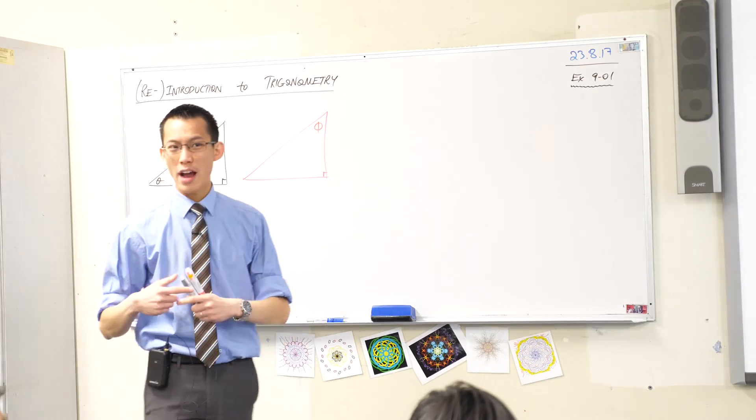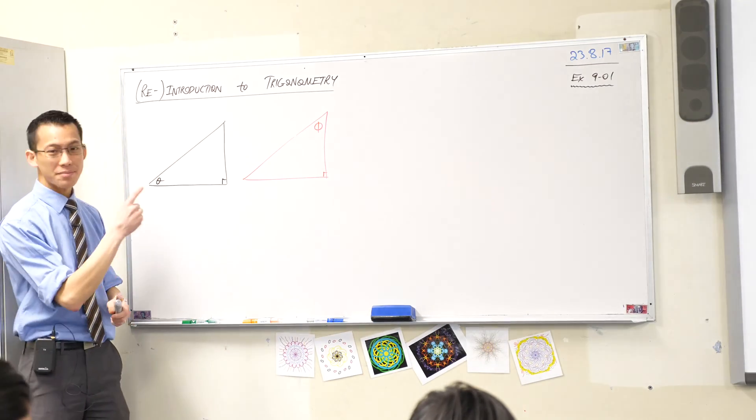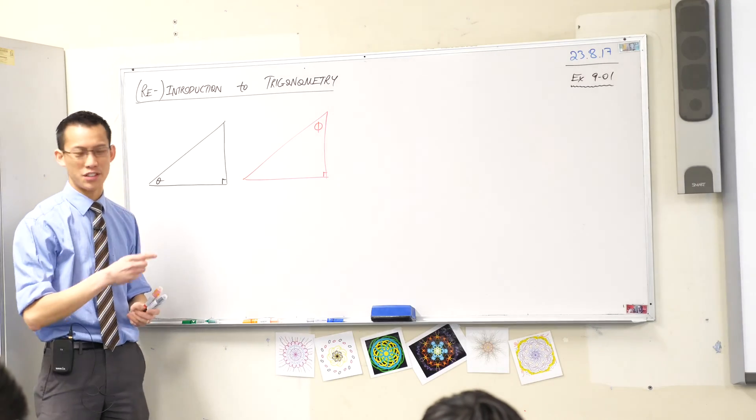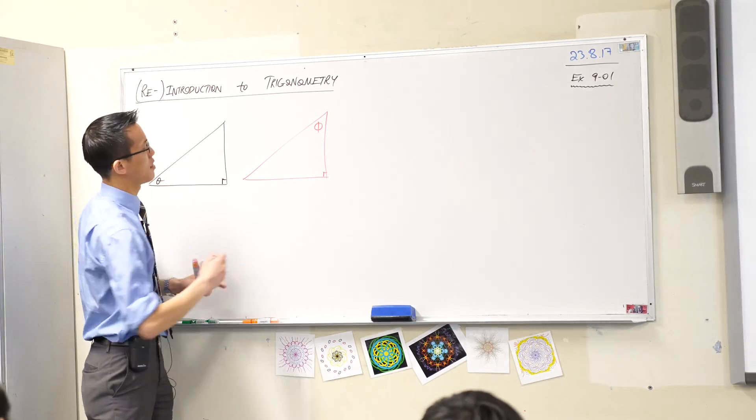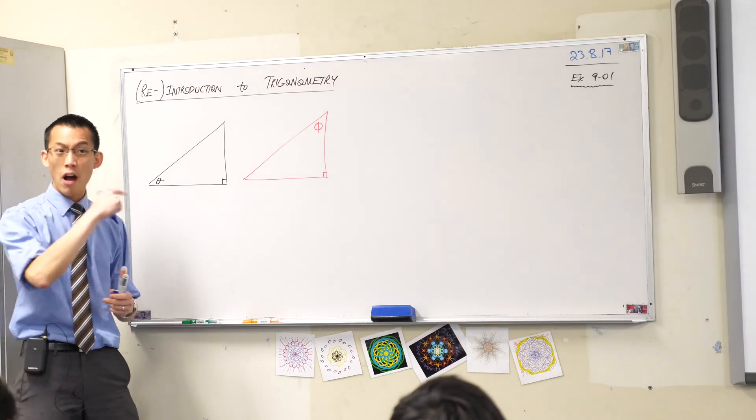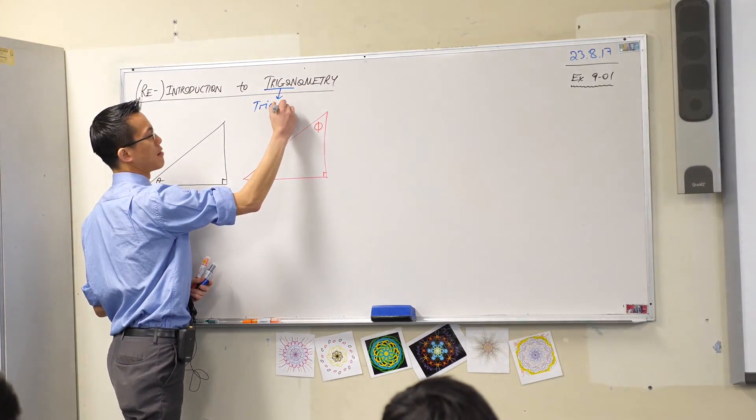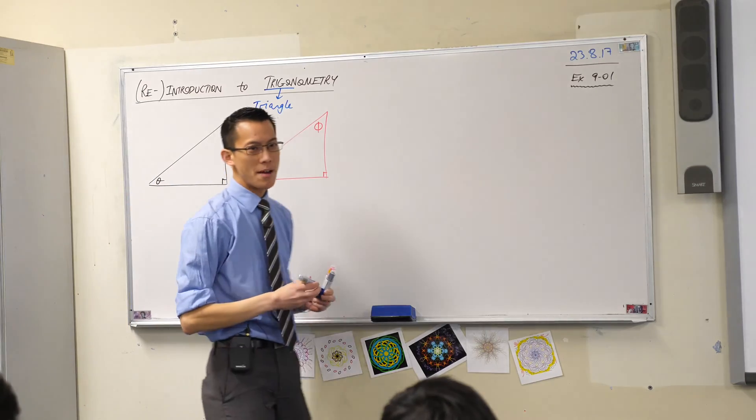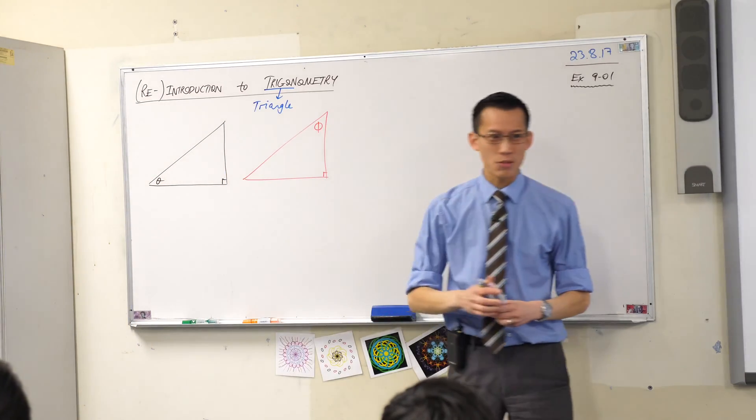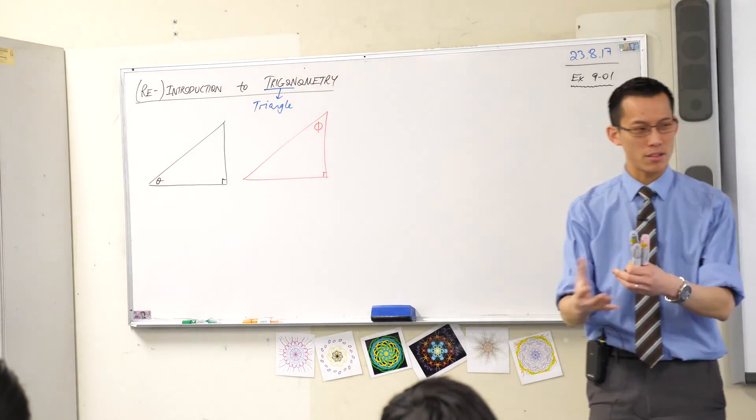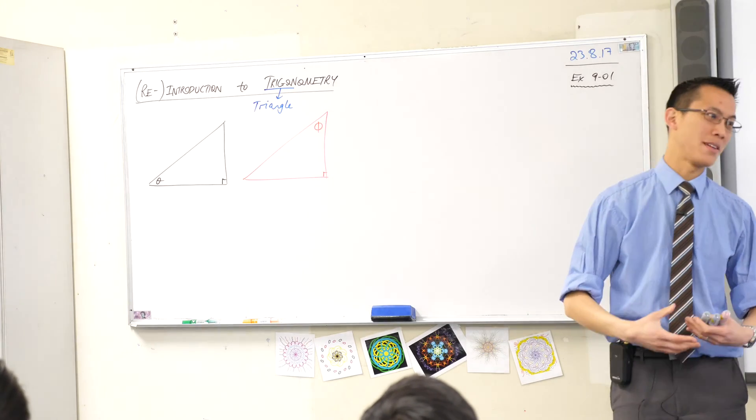We have a look a lot at triangles because if you have a look at the name of the topic, trigon is just another name for triangle. Tri meaning three, gon meaning what we get - it's the same kind of thing that is under the word polygon, which just means many.